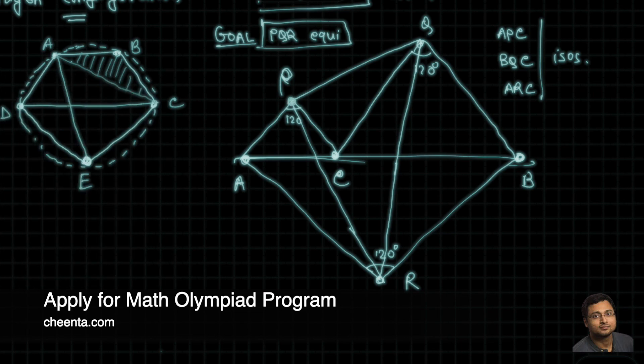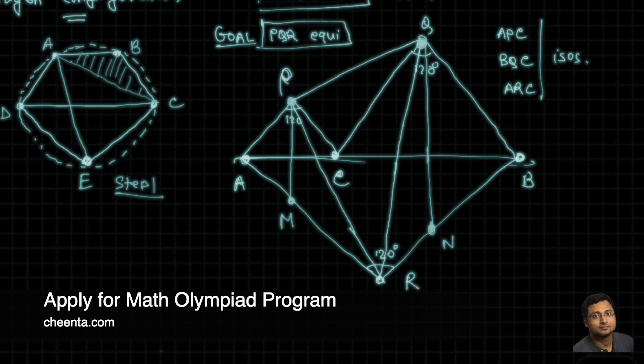We drop a perpendicular from P to AC. Let's call this point M and drop a perpendicular from Q to AB, C again. So this is N suppose. Now the step one is to show that QCM and PCN are in the same straight line.